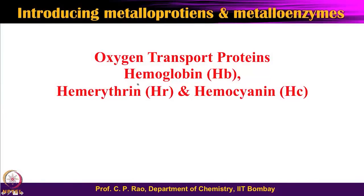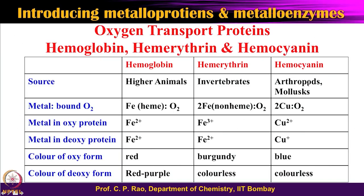Oxygen transport proteins: the one we are very well aware of in human systems is hemoglobin. Less commonly known are hemerythrin and hemocyanin, which are not for human systems but for other kinds of organisms, as I will show in the next slide. The short form for hemoglobin is Hb, for hemerythrin is Hr, and for hemocyanin is Hc. Looking at this table, hemoglobin is for higher animals, hemerythrin is for invertebrates, and hemocyanin is for arthropods and molluscs.